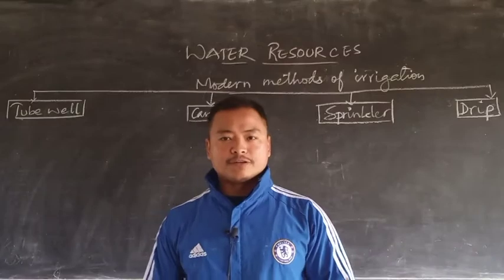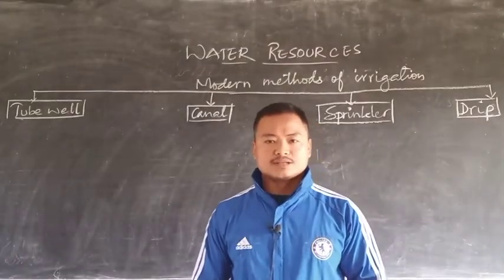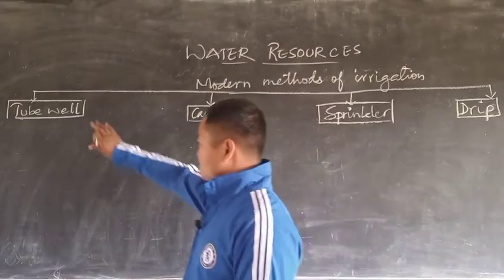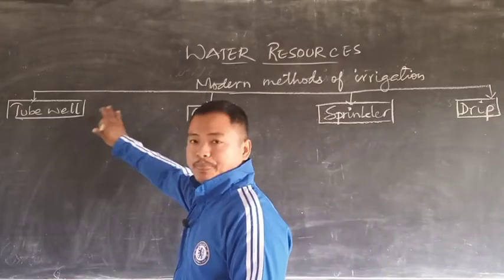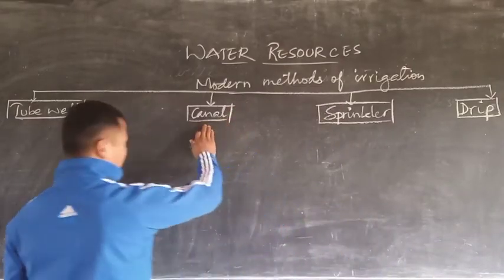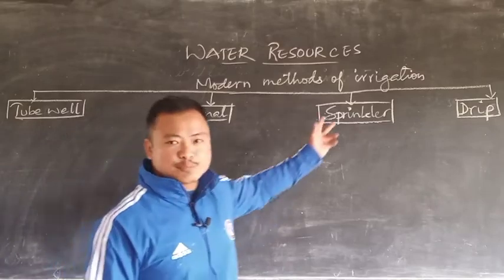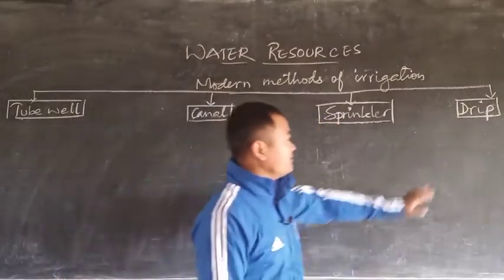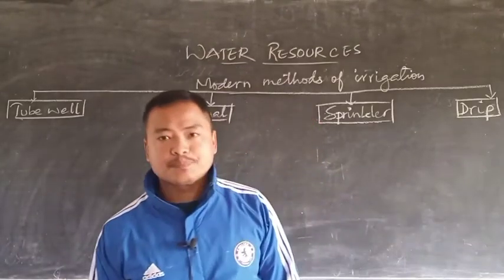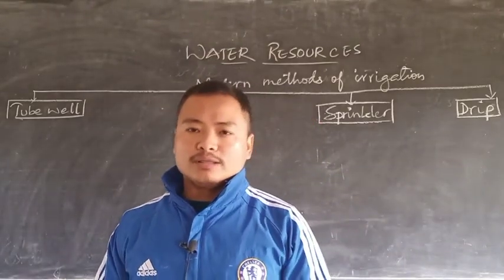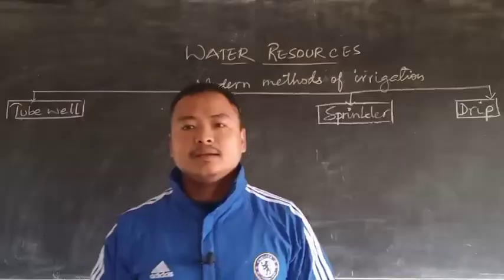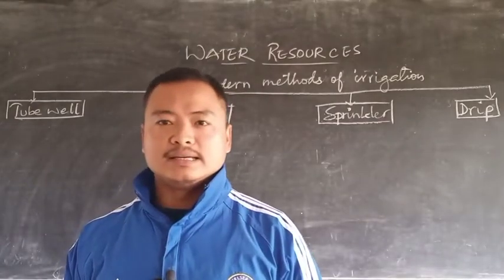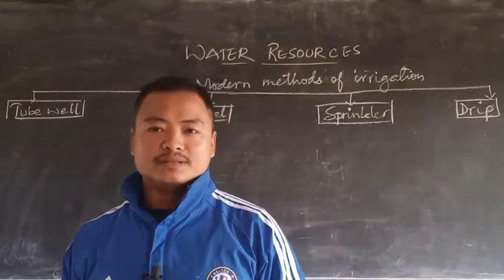The four different methods of irrigation practice in India which are considered modern are: tube well irrigation, canal irrigation, sprinkler head irrigation (also simply called sprinkler irrigation), and drip irrigation. We call them modern methods because of the involvement of technology in these four methods.